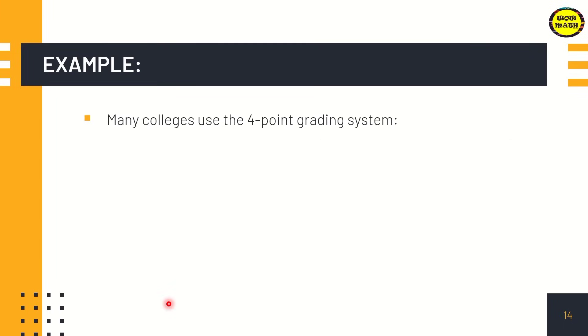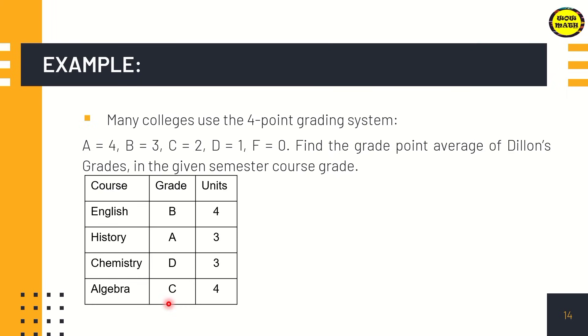For example, many colleges use the 4-point grading system. In some colleges, grades are letters: A equals 4 points, B equals 3 points, C equals 2 points, D equals 1 point, and F equals 0. Find the grade point average of Dillon's grades in the given semester course grade. Here's Dillon's average grade in 4 courses: English B, History A, Chemistry D, Algebra C.